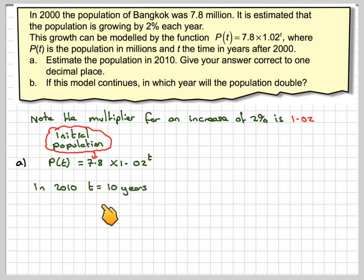In 2010, T is 10 years. So P(10) = 7.8 × 1.02^10. We can work that out on a calculator. That gives me 9.5081. Remember, that's million.